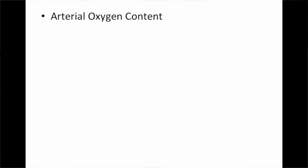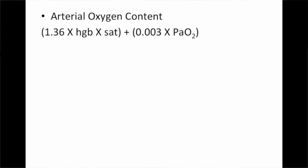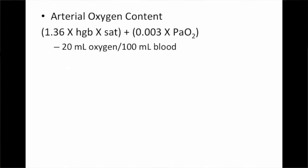If you look at the slide, you'll see that the first equation is for arterial oxygen content. There are two components: the oxygen bound to hemoglobin and the oxygen dissolved in the blood. The oxygen bound to hemoglobin is represented by 1.36 times the hemoglobin times the oxygen saturation, and the dissolved component is 0.003 times the PaO2. The normal value is 20 mL of oxygen per 100 mL of blood.